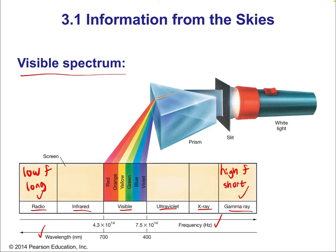Energy is also in this direction: the lowest energy type of electromagnetic radiation is a radio wave, and the highest energy type of light is a gamma ray. Visible light is kind of in the middle.